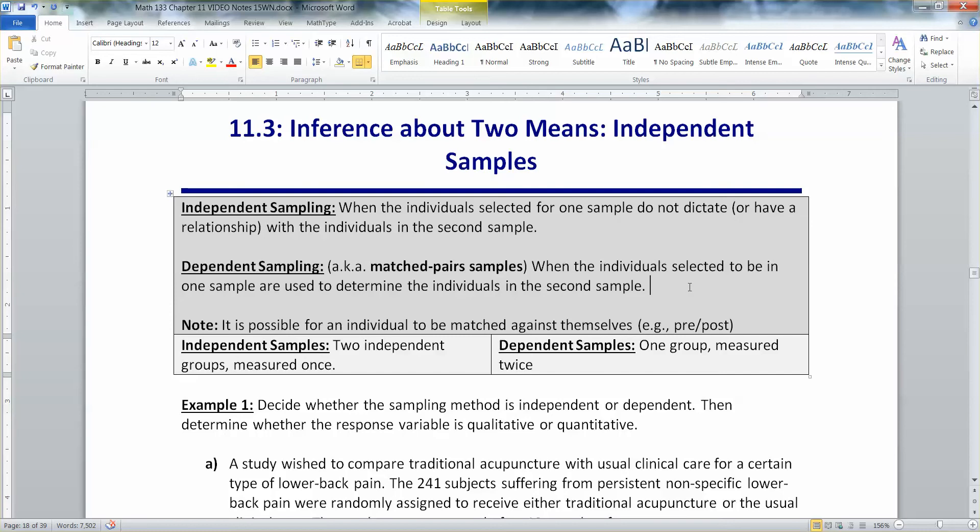For example, pre-test post-test, or husbands and wives, or one twin and another twin, siblings, that kind of thing. Then they're dependent upon each other because they're related to each other.